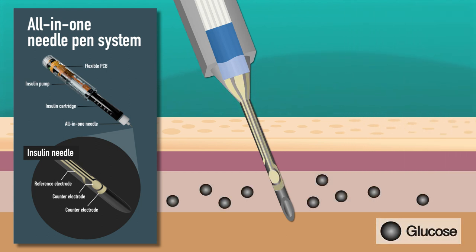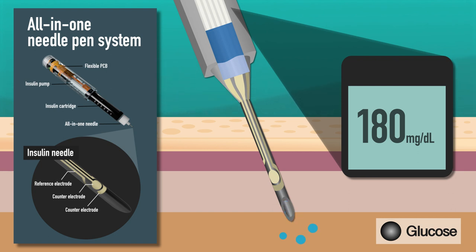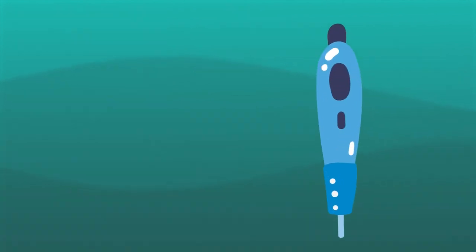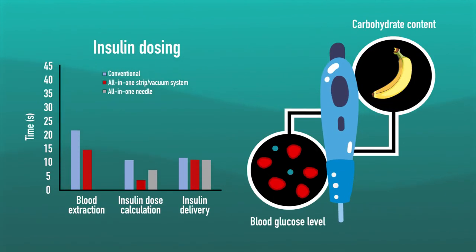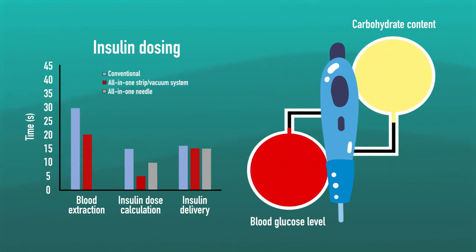The glucose sensor is on the surface of the insulin needle and measures the glucose concentration in the interstitial fluid when the needle is inserted prior to insulin delivery. A separate lancet to penetrate skin prior to insulin injection is no longer needed. Both all-in-one pens use the measured glucose level and the estimated carbohydrate content from computer vision, and then compute the insulin dose.